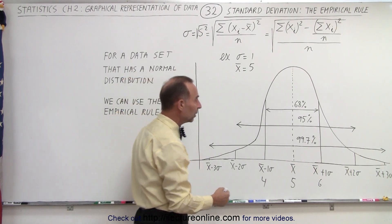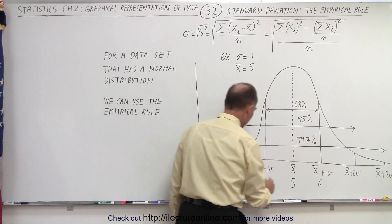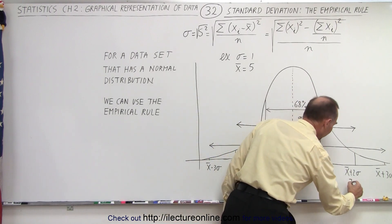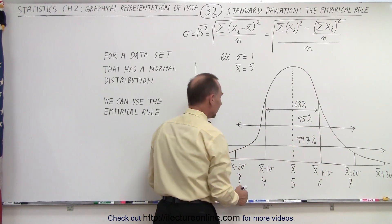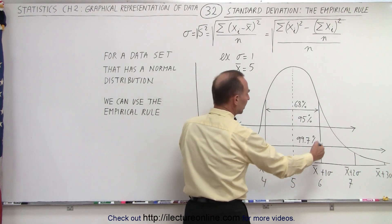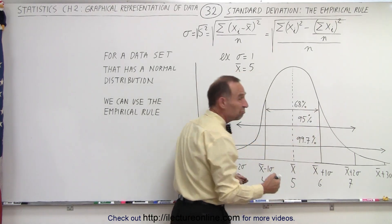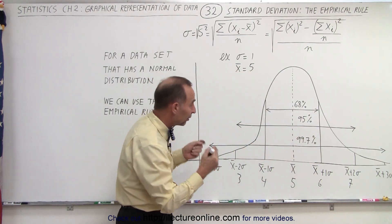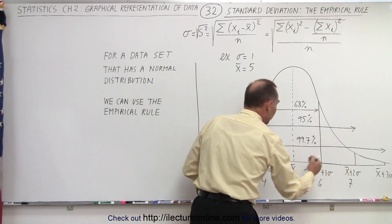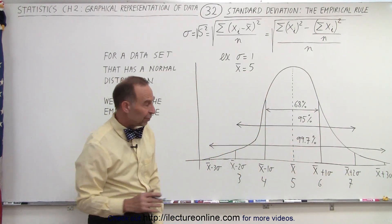If we then go out an additional sigma, we go out two sigma and minus two sigma, so this would be seven, and this would be three, then we can be assured that nearly 95%, maybe a little bit more, a little bit less, but very close to 95% of all the data will fall between three and seven.